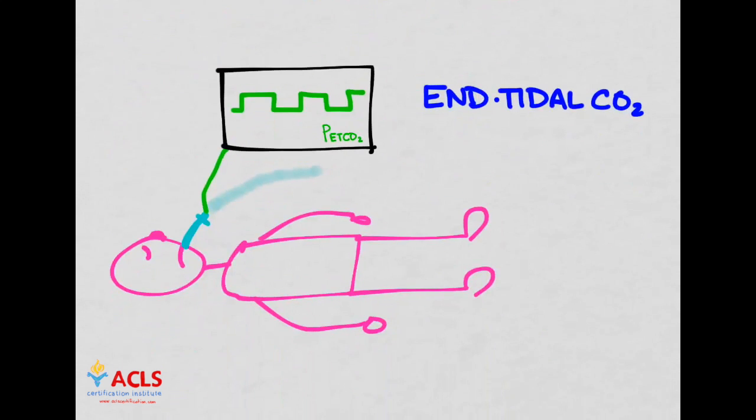Next, we're going to look at end tidal CO2 detection or capnography, continuous capnography. And what that is, is if you have a patient who is intubated, you can attach some sort of measurement device to the endotracheal tube and it's going to measure the concentration, the partial pressure of carbon dioxide. So you can see here, it's the partial pressure, that's what the P is, and tidal CO2.